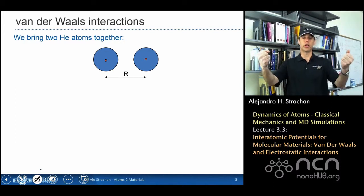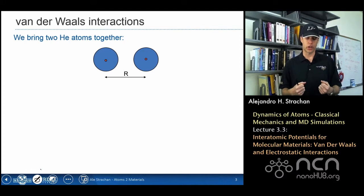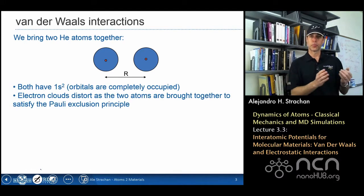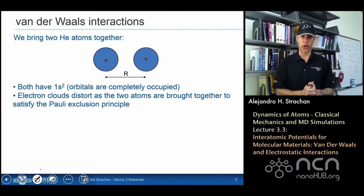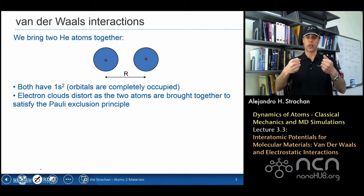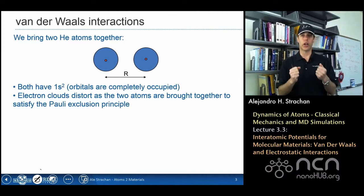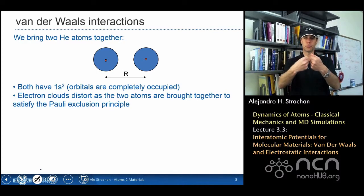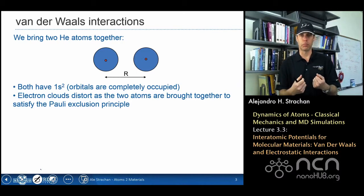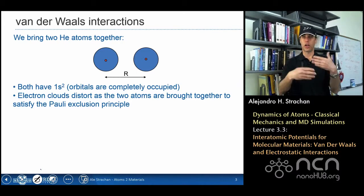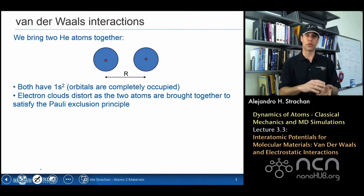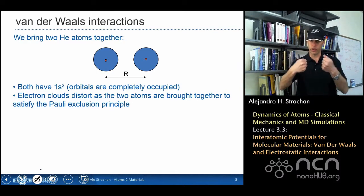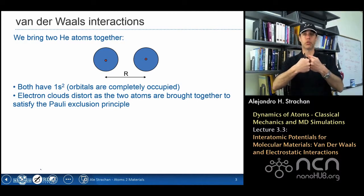Let's think about what happens if I bring two helium atoms together. What we saw in weeks one and two is that these atoms have the 1s shell completely occupied with electrons, so when I bring them together they would not make a chemical bond.